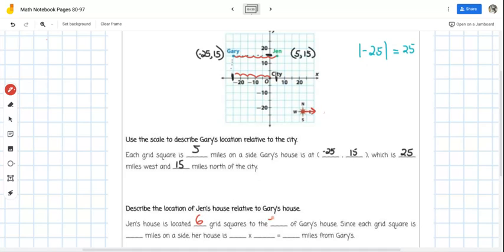Now, since each grid square is, we already determined this, each grid square is five miles on a side. Her house is six grid squares times five miles, which equals 30 miles from Gary's house. And again, if you're walking from Gary's house to Jen's house, you're moving on the x-axis going positive. You're going to the right, you're moving positive from negative 25 to positive five, but you're still moving one, two, three, four, five, six grid spaces. It's still 30 miles away from Gary's house. If you walk from Gary's house to Jen's house, it's 30 miles. If you walk the other direction from Jen's house to Gary's house, it's 30 miles. So 30 miles is what we're looking at here from Gary's to Jen's house.